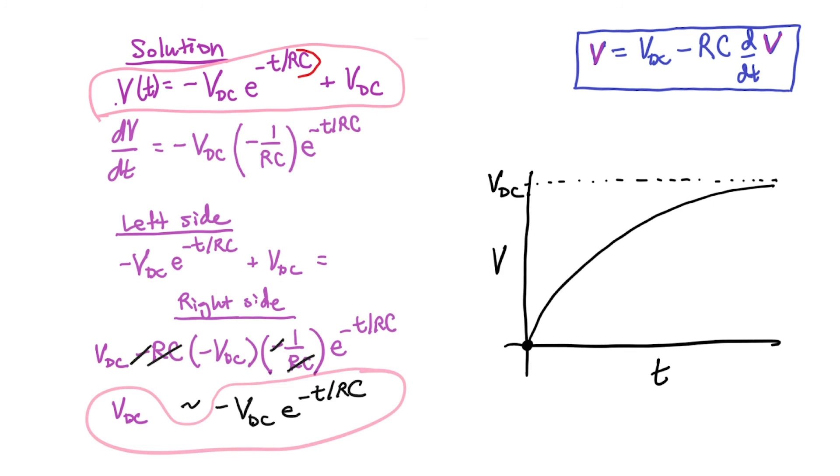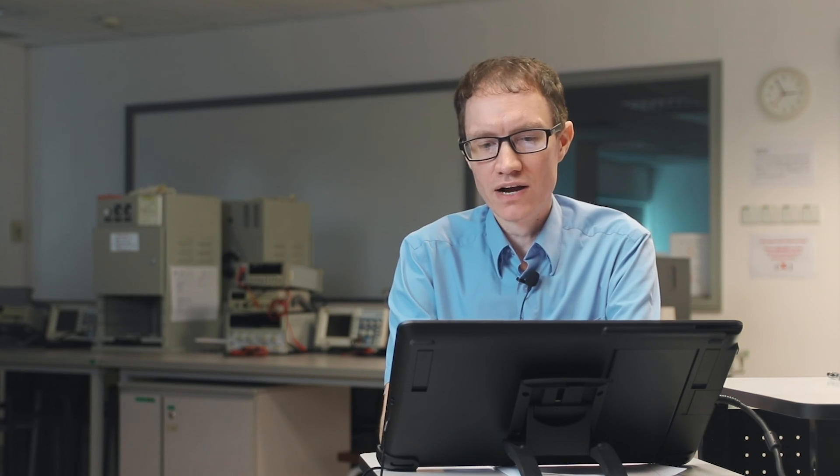The reason why we call something the RC time constant is because of the ratio in the exponent. We have T over RC. It means that for the units to work out correctly, RC has units of seconds. If we change the resistor, if we change the capacitor, will the capacitor take longer or a shorter period of time to charge? If we use a larger capacitor, a larger C value, the capacitor will take longer to charge.